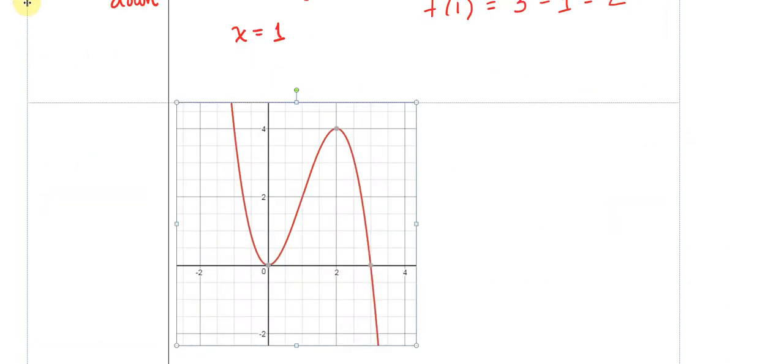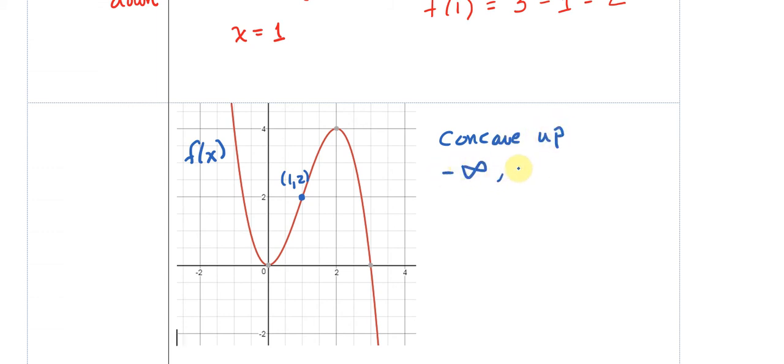With the help of modern technology, I've graphed this relatively quickly. You can see this is the graph of f of x. It is concave up from negative infinity to 1. This is our point of inflection at (1, 2), and it's concave down from 1 to positive infinity.